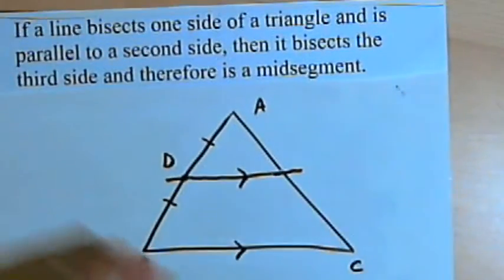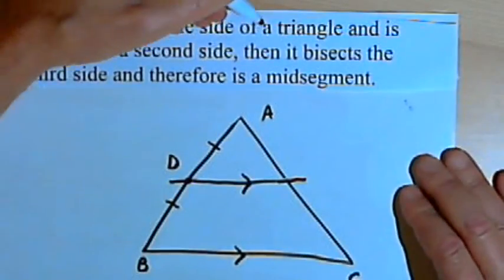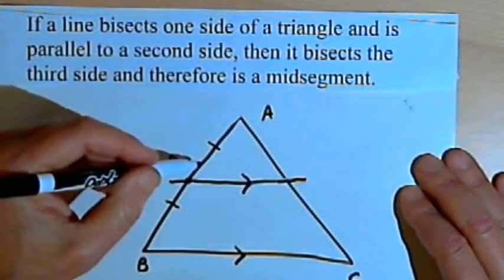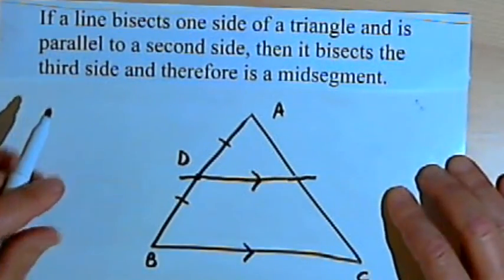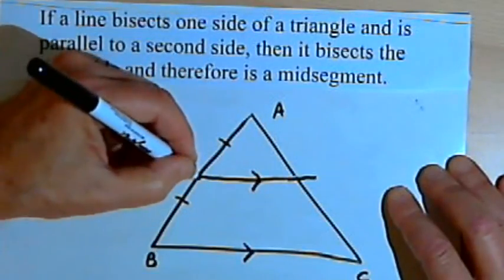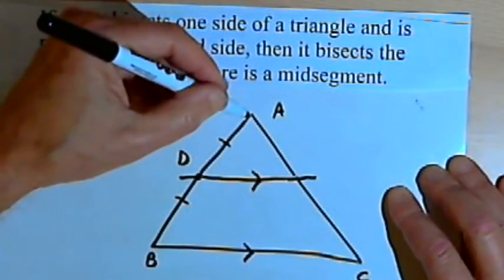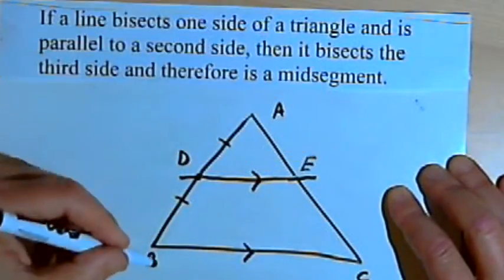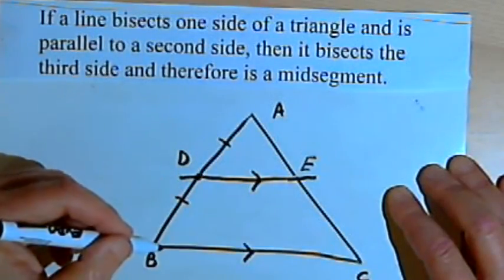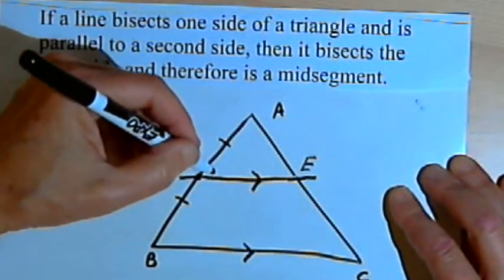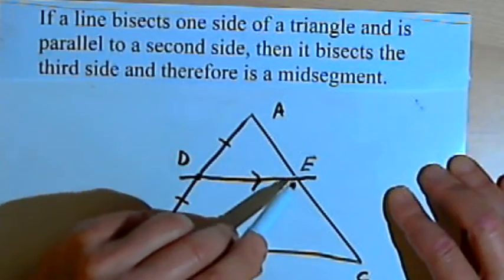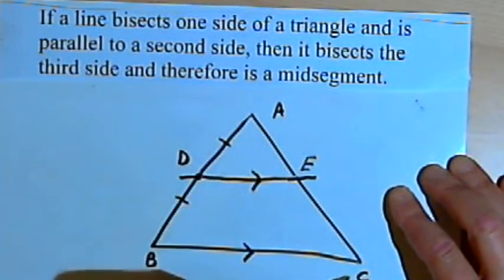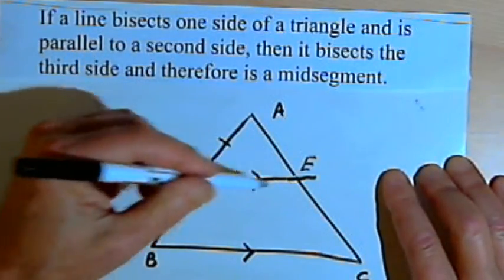There's another theorem that kind of goes along with this one. Here's what it says: if a line bisects one side of a triangle and is parallel to a second side, then it bisects the third side and is therefore a mid-segment. I've got triangle ABC and I've marked point D as a point that bisects side AB, and I've drawn line DE, which is going to be parallel to BC. What this theorem says is that point E would have to be a midpoint for side AC — that line DE must bisect side AC — and therefore DE must be a mid-segment.